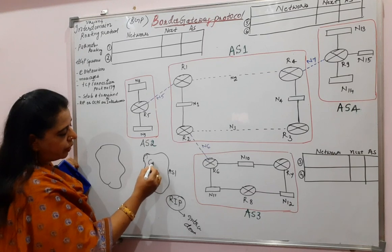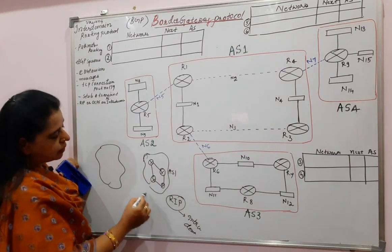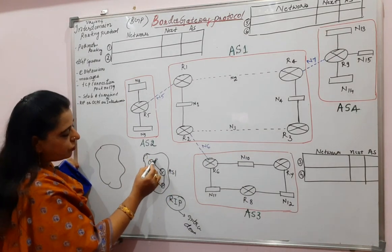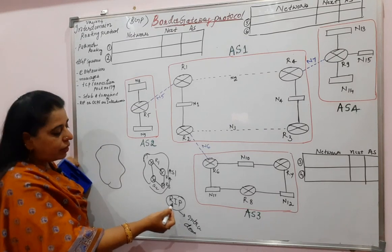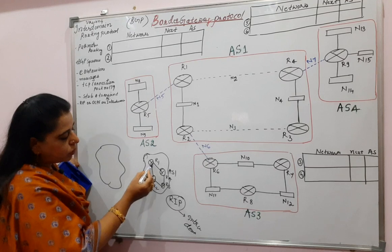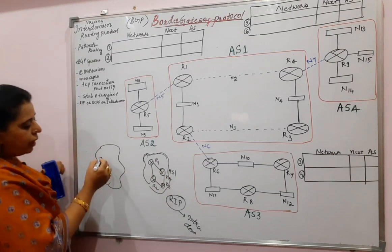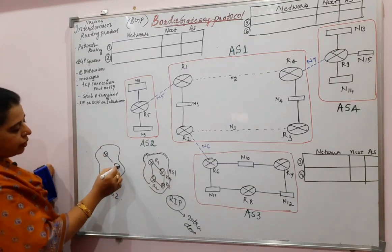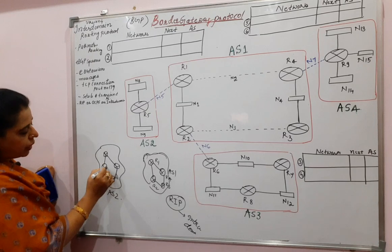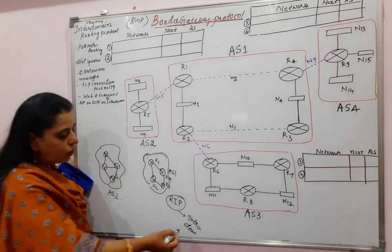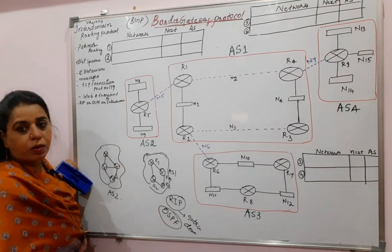Within this autonomous system AS1, the different routers connected via networks can construct their forwarding tables. RIP is one such protocol; with its help, routers construct forwarding tables to reach networks connected within this domain only. Similarly, in AS2, if routers want to reach networks connected within the domain, they can use intra-domain routing protocols — not only RIP but also OSPF — to construct forwarding tables.